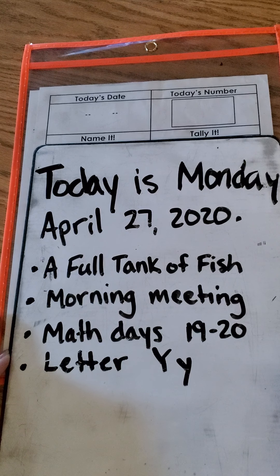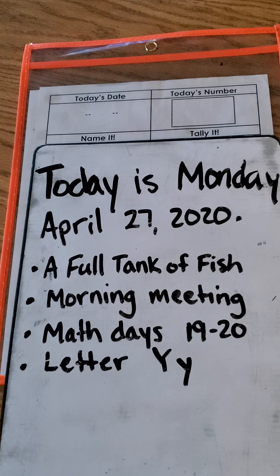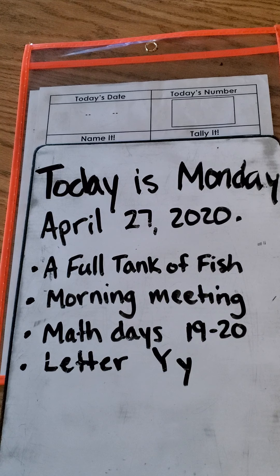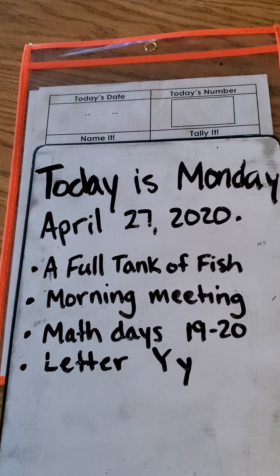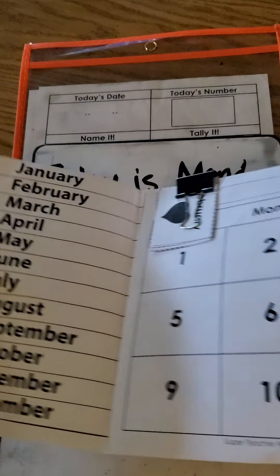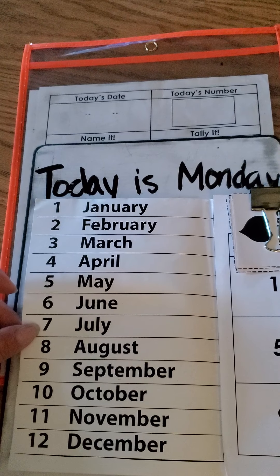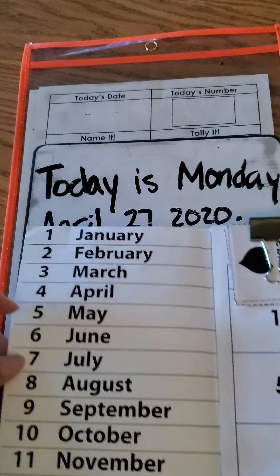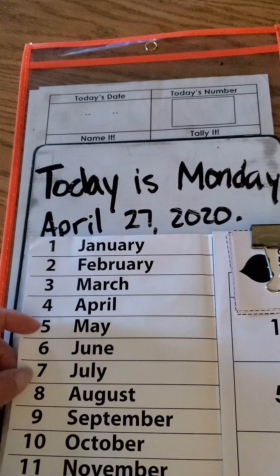Today's date — you guys got this pretty well. Remember, if you're not quite sure, you have all those tools that tell you the month, the date, the year to help you figure out your code. So our first one is finding the month. This year months — we need to find the month of April.